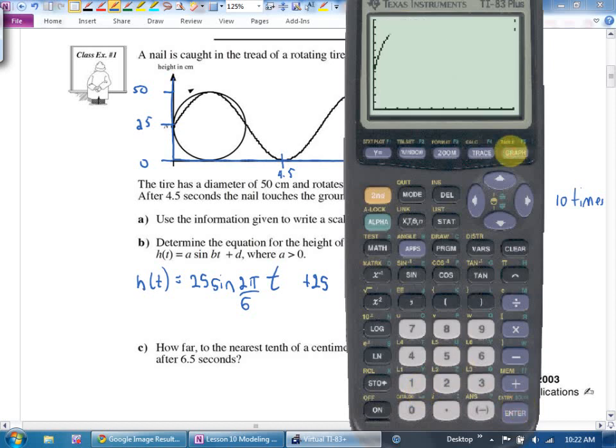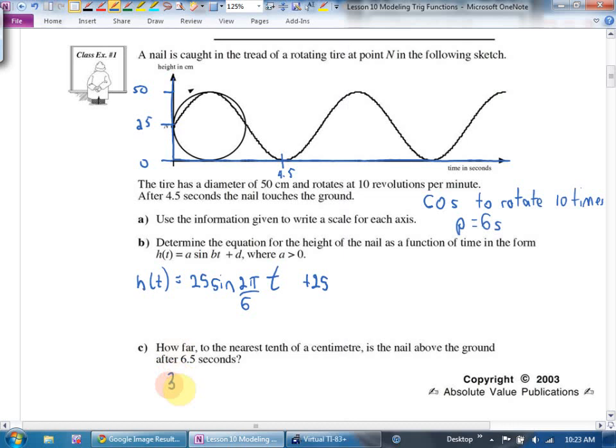So here's the first example. A nail is caught in the tread of a rotating tire at point N in the following sketch. And as the tire rolls, the nail goes up, the nail goes down, the nail goes up, the nail goes down. It's a beautiful sinusoidal, remember sinusoidal means sin or cos, function. The tire has a diameter of 50 centimeters and it rotates at 10 revolutions per minute. After 4.5 seconds, the nail touches the ground.